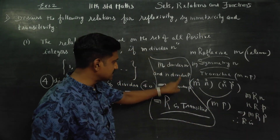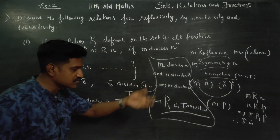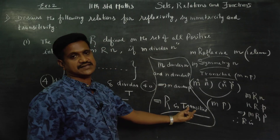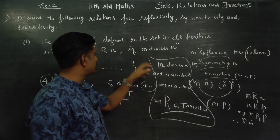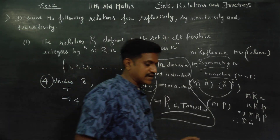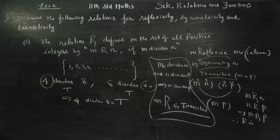M divides N and N divides P implies M divides P, therefore R is transitive. To summarize: you have to check three conditions — same letter with same letter for reflexive; two letters direct and reverse order for symmetry; and for transitive, three letters: check first–second, second–third, and first–third.